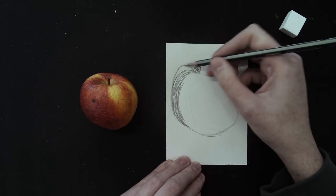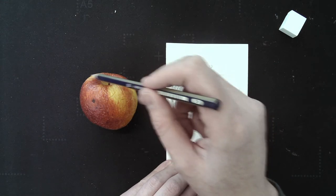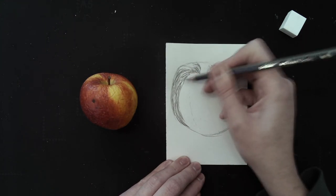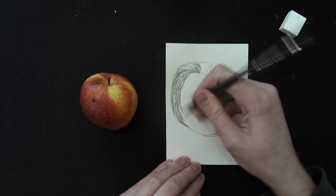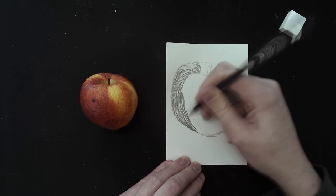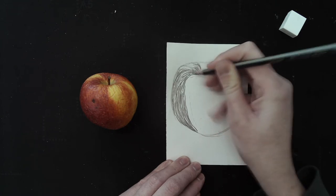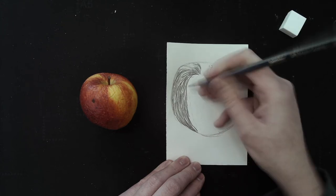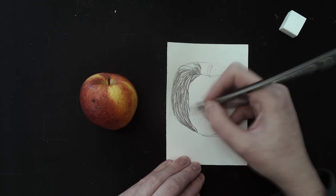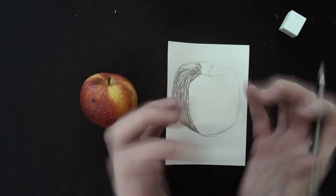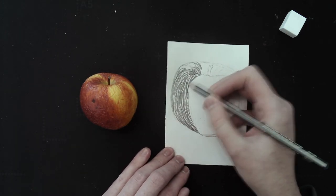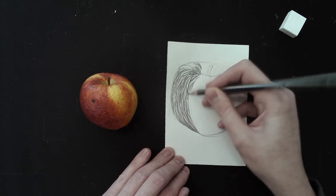And I'm not going to apply marks around here because on the apple, as you can see, it's really light. So I'm going to leave that area. And now you can start to see the more I do, the more you can start to see the 3D shape being applied. And that's only because of my direction of marks. Your direction is really important.